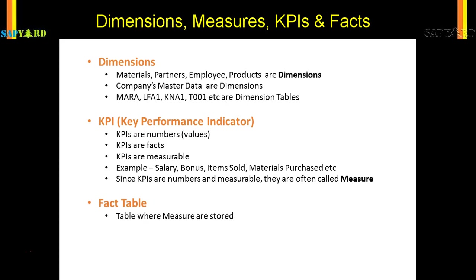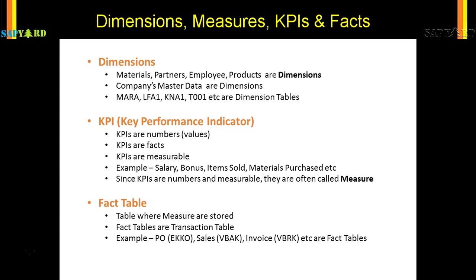Now, what is a KPI? All your managers in C-level meetings always talk about KPIs, dimensions, and measures. The full form is Key Performance Indicator. KPIs are nothing but numbers — the profit that a company makes is a KPI, the loss that a company incurs is another KPI. KPIs are numbers and when there are numbers, those are facts. You have to say the numbers — for example, we had a 10% growth this year. That is a KPI.